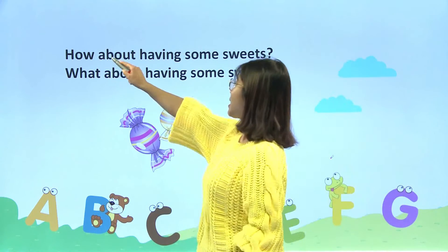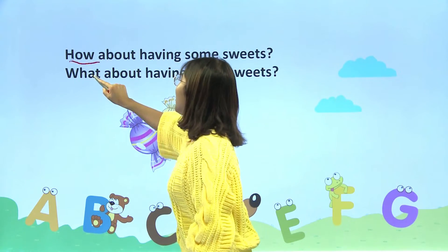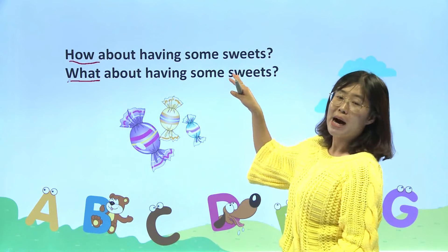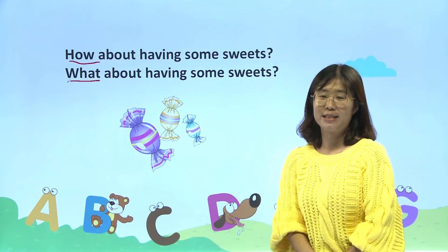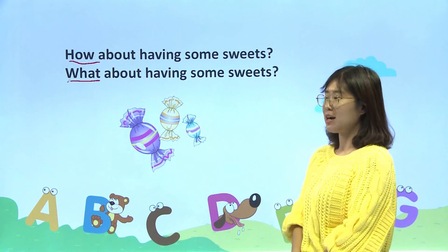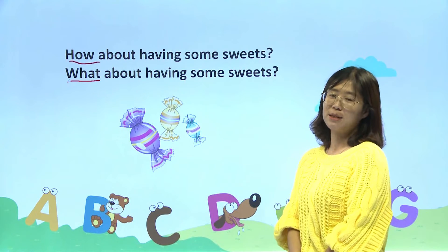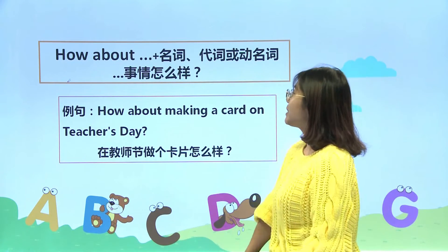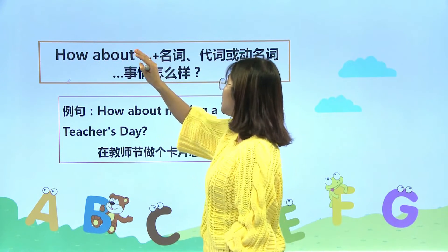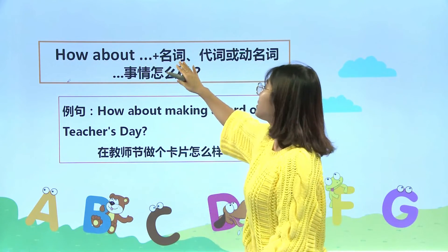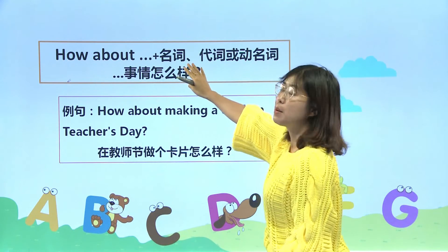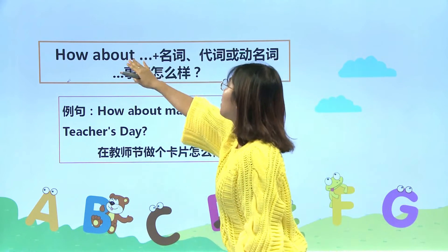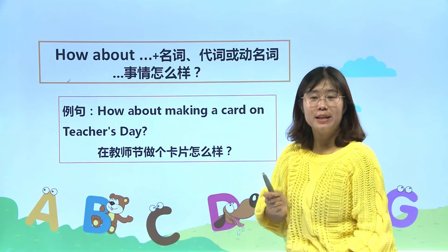看一下这两个句子哪里不一样呢？只有第一个疑问词是不一样的。在这里how about跟what about意思是一样的，都表示做什么什么事情，如何，怎么样呢？How about you? 你怎么样呢？